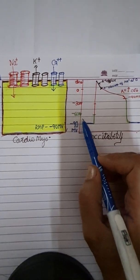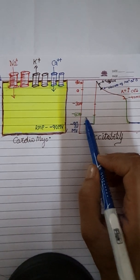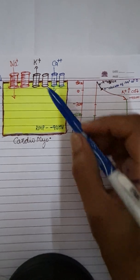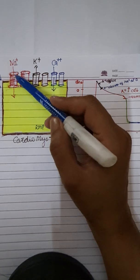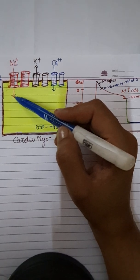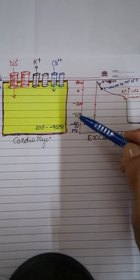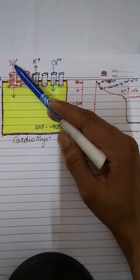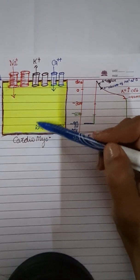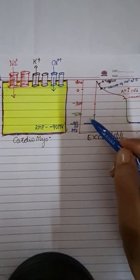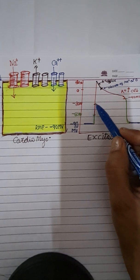Once minus 60 millivolt potential is reached, it is the threshold potential where voltage-gated sodium channels open up. There is entry of sodium within the cell which neutralizes the negativity of the cell. Lots of sodium ions come in and the membrane rapidly loses its negative potential and reaches up to minus 30 millivolts.